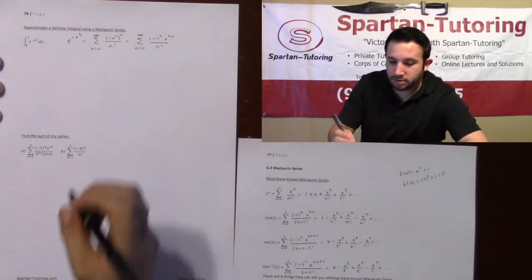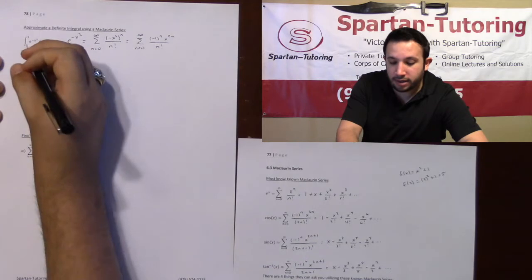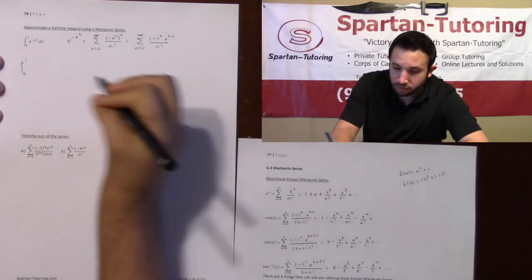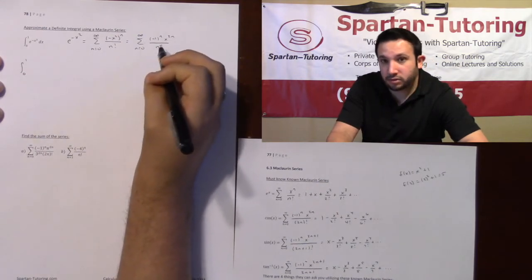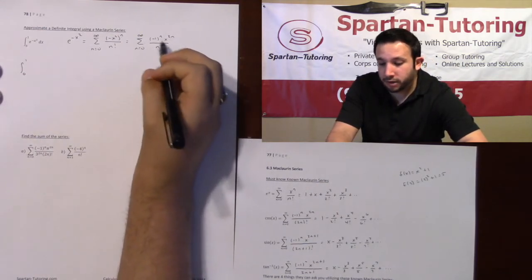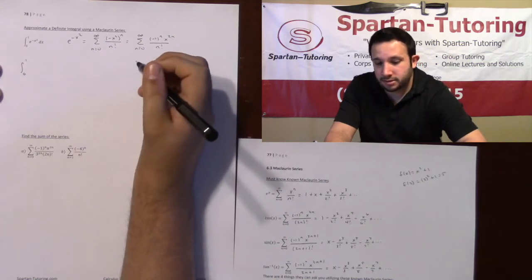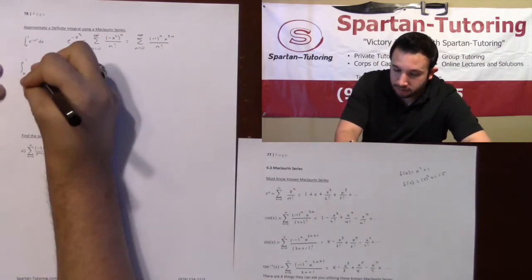Now that we have that, let's go ahead and do our integral. What I want to do is take the integral from zero to one of this power series. Remember what I talked about over and over again: I can treat this series as if it was the function because it is that function.